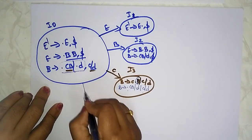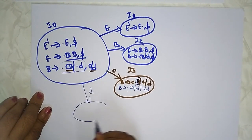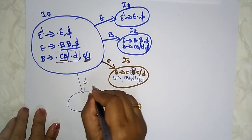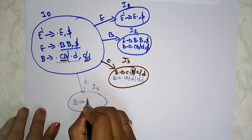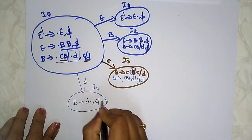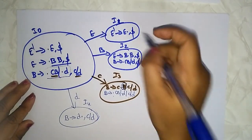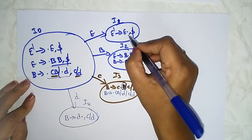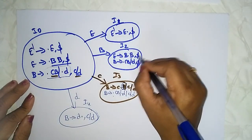Now let's take small 'd', which is terminal — this gives I4: B → D · with the lookahead value. I4 is over; no extra states will come because this is a final state with no terminal or non-terminal after the dot.